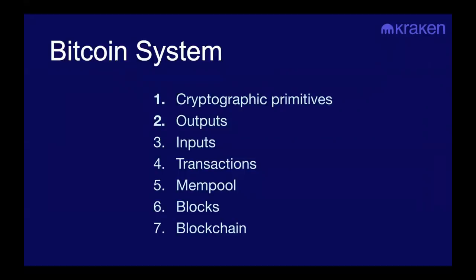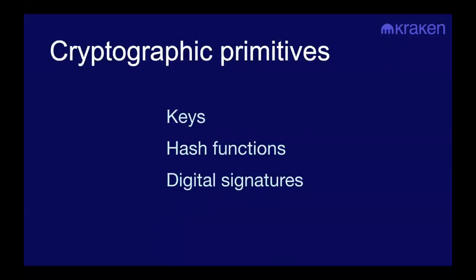In any case, we're going to start with an explanation of how the Bitcoin system works. As we go along, I'll be highlighting some of the interesting properties that this system has. At the most granular level, the Bitcoin software is leveraging cryptographic primitives to enable user interaction with the system. The Bitcoin system relies on keys, hash functions, and digital signatures.